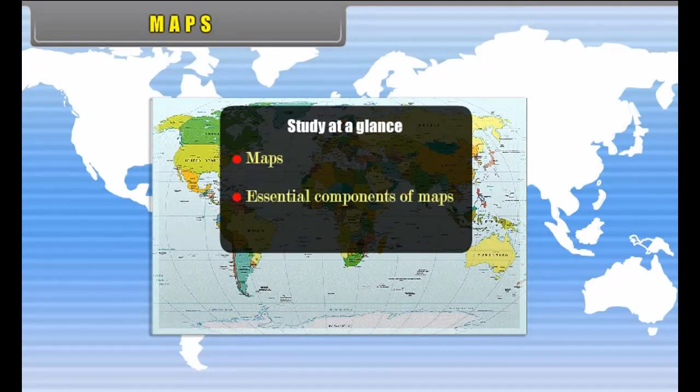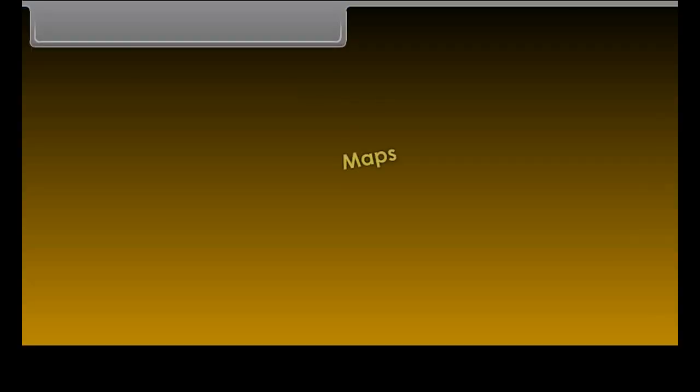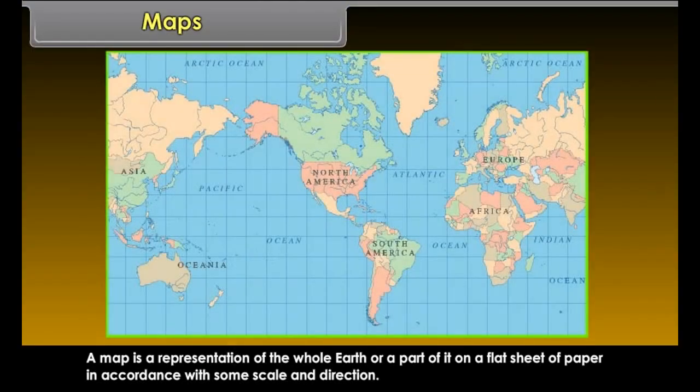A map is a representation of the whole earth or a part of it on a flat sheet of paper in accordance with some scale and direction.